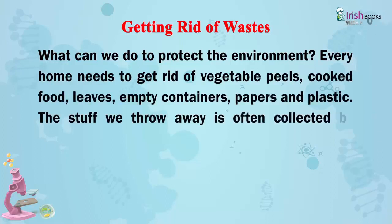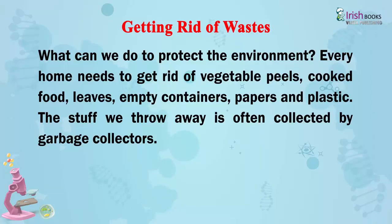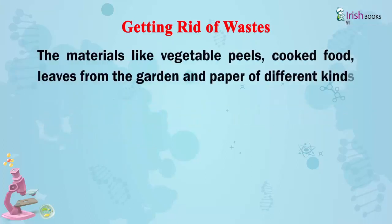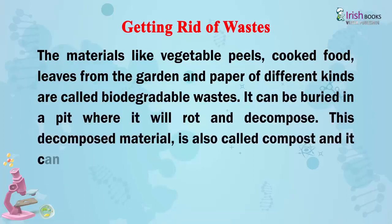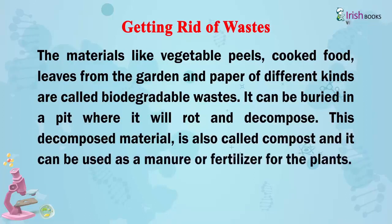Getting rid of waste. What can we do to protect the environment? Every home needs to get rid of vegetable peels, cooked food, leaves, empty containers, papers and plastic. The stuff we throw away is often collected by garbage collectors. The materials like vegetable peels, cooked food, leaves from the garden and paper of different kinds are called biodegradable waste. It can be burned in a pit where it will rot and decompose. This decomposed material is also called compost and it can be used as a manure or fertilizer for the plants.